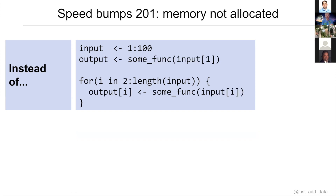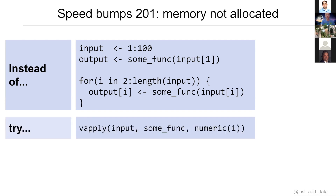Speed bumps 201 — memory not allocated. We dug into this in the live demo with the square root function. Sometimes if you initialize the output as just a single value and then iterate over a vector and grow your vector, that's a problem for memory allocation.